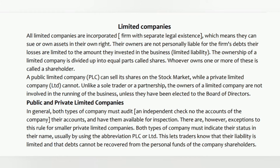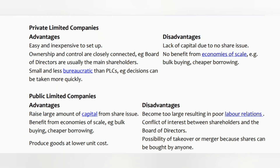Private limited companies — advantages and disadvantages. Advantages: easy and inexpensive to set up; ownership and control are closely connected, e.g. the board of directors are usually the main shareholders; small and less bureaucratic than PLCs, so decisions can be taken more quickly. Disadvantages: lack of capital due to no share issue; no benefit from economies of scale, e.g. bulk buying or cheaper borrowing.